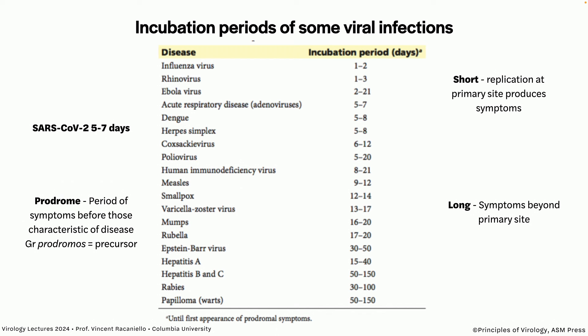Here are incubation periods of some viral infections. Influenza virus is quite short. Ebola is two to 21 days — a big range, but taking a history will help you. Short incubation periods are most likely where the virus enters and causes disease at the site of entry, like a respiratory virus infection — the virus comes into your nose and reproduces in the epithelium of the nasopharynx, and that's where the symptoms occur.